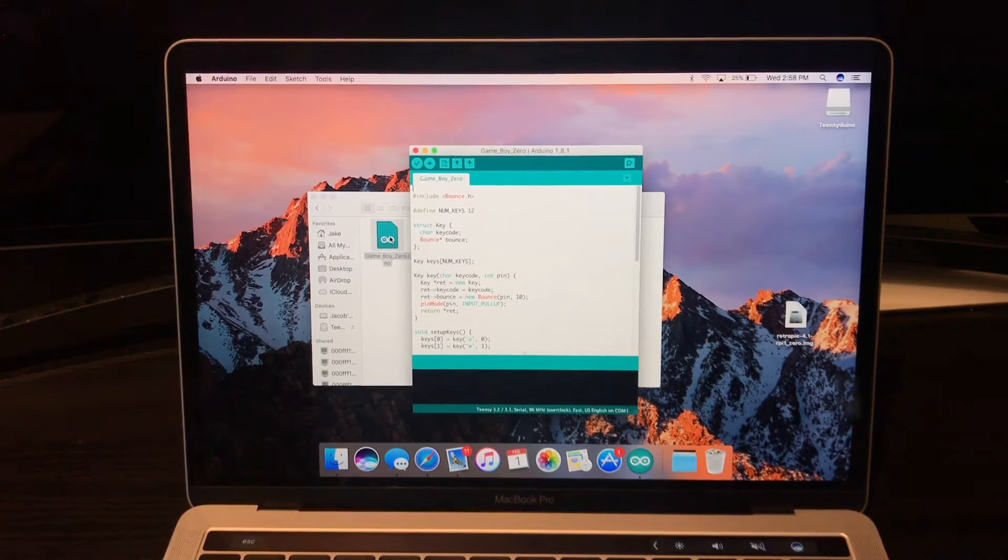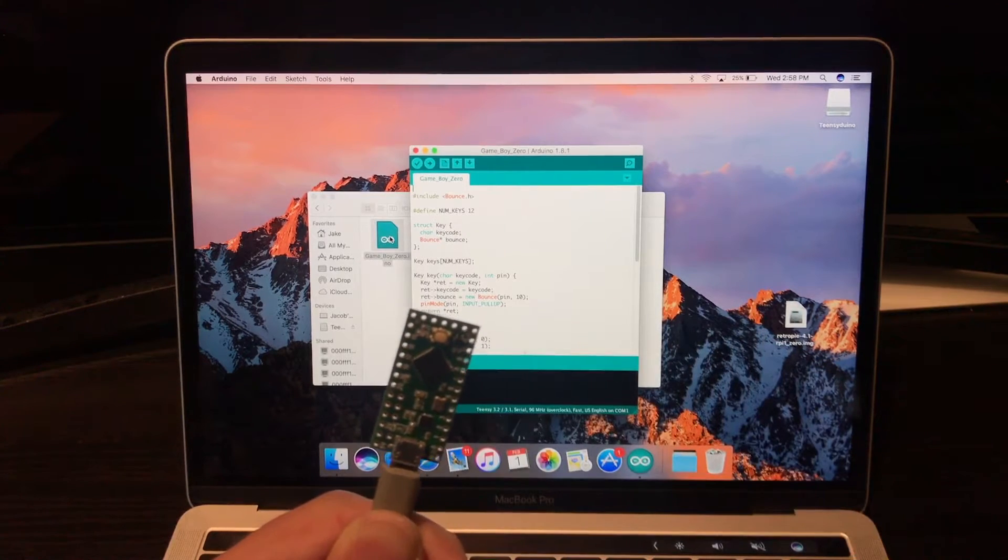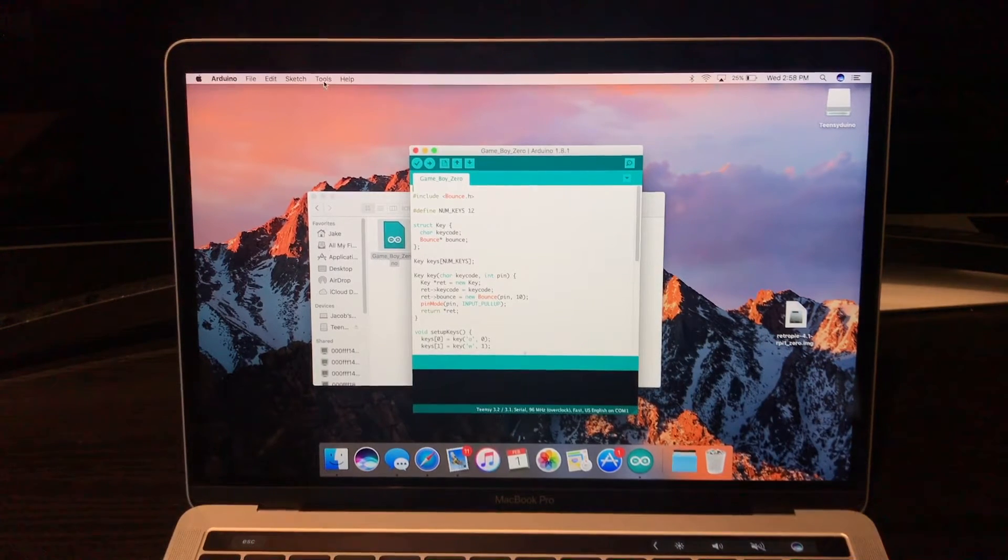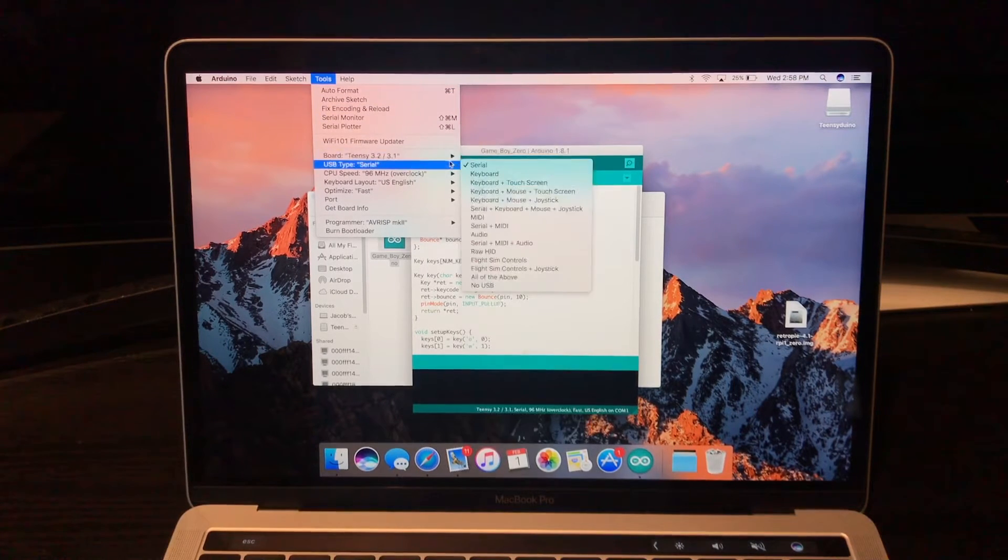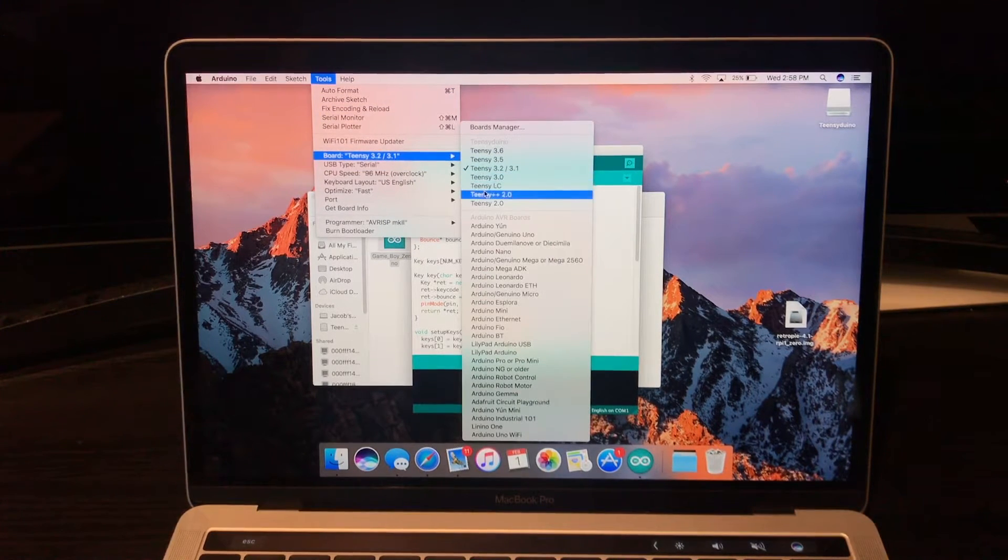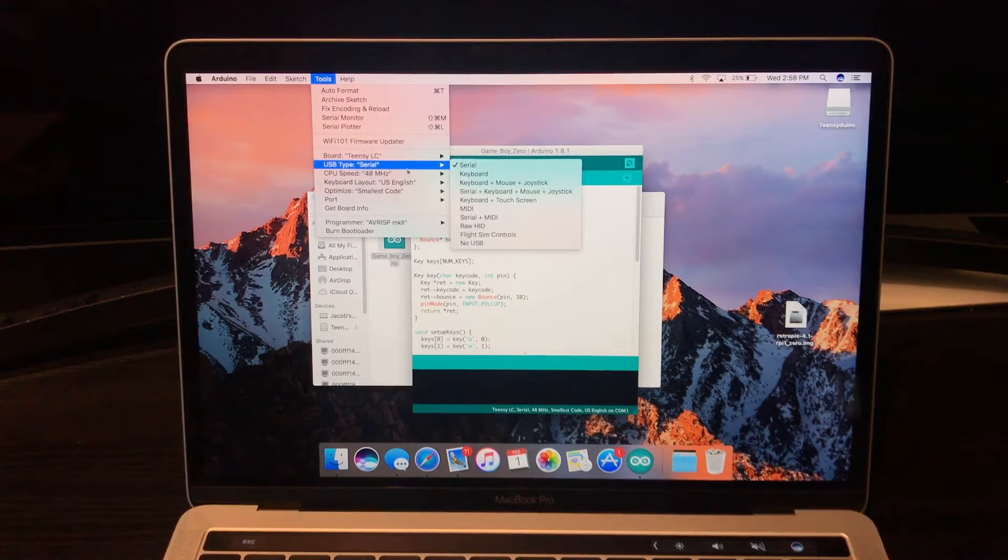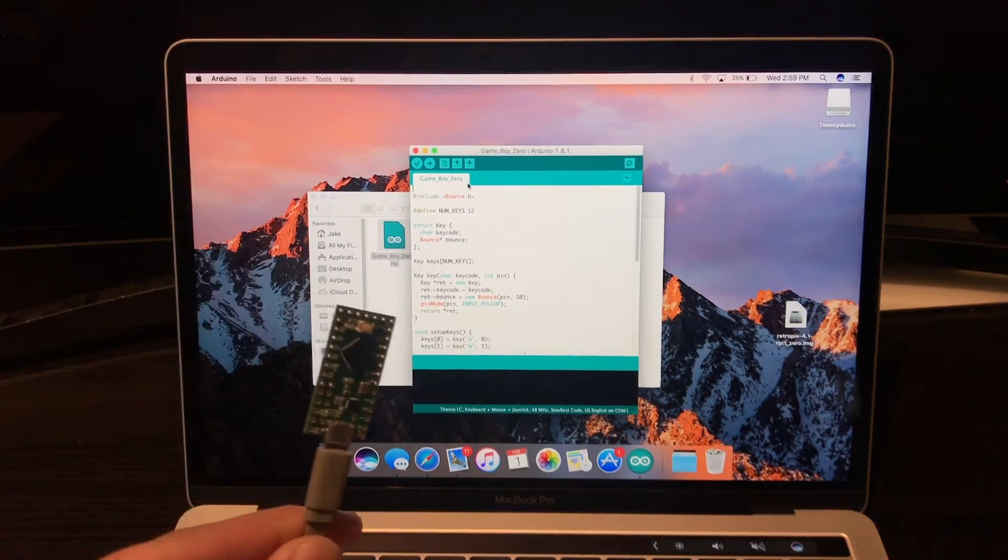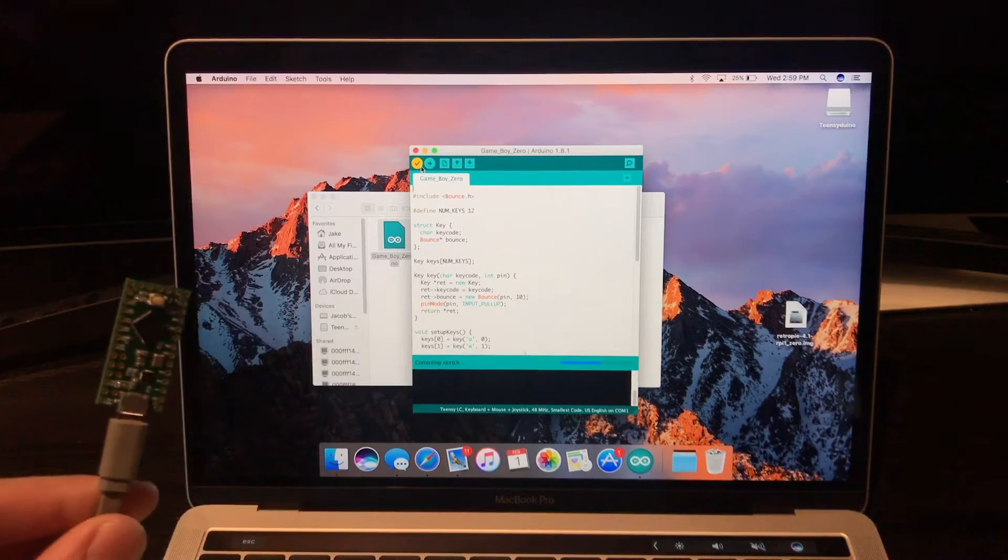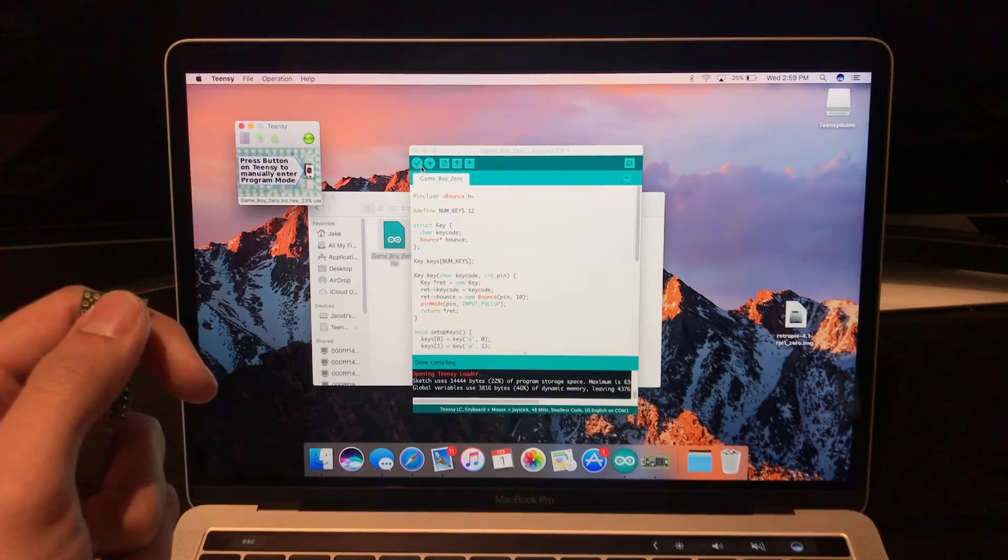Once you have that open, you can now go ahead, plug in your Teensy, and then go up to tools. Once you're in tools, go down to board, and select Teensy LC, and then go back up to tools, select USB type, and then go to keyboard plus mouse plus joystick. Now once you have both of those selected and your Teensy is plugged in, click the plus button, and then press the button on your Teensy.